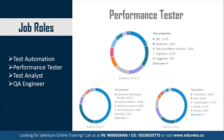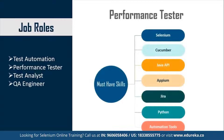Next up is the Performance Tester profile. Some of the top companies for this job role are IBM, Accenture, TCS, Cognizant, and Capgemini. The top industries for Performance Tester are IT Services, Computer Software, Telecommunications, Financial Services, and Banking. The United States is considered the best preferred location for a Performance Tester, followed by India, UK, Canada, and Australia. Must-have skills include knowledge of Selenium, Cucumber, Java API, APM, Jira, Python, and proficiency with Automation Tools.